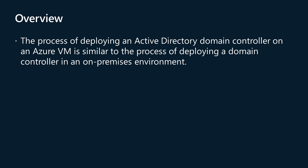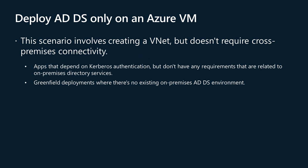Azure provides multiple options for implementing directory and identity services using ADDS in Azure, and the different considerations and requirements are based on the deployment scenario you select. Deploying ADDS only on an Azure VM involves creating a VNet but doesn't require cross-premises connectivity. Typically this deployment starts with a new forest where all domain controllers run only on Azure VMs, and you should consider setting static IP addresses for domain controllers. This scenario is common for apps that depend on Kerberos authentication but don't have requirements related to on-premises directory services, such as greenfield deployments with no existing on-premises ADDS environment.